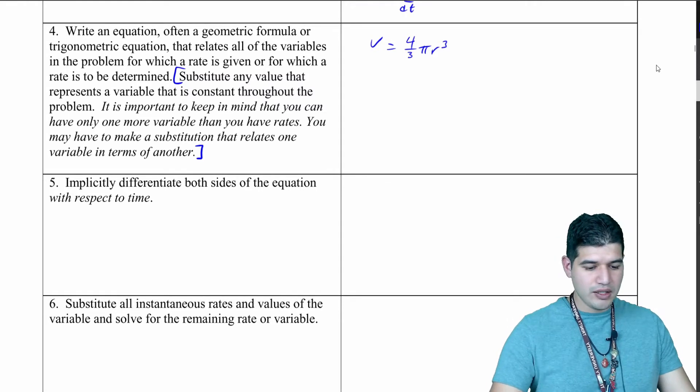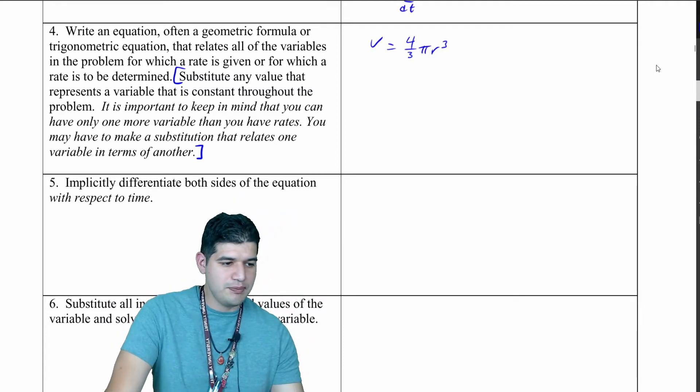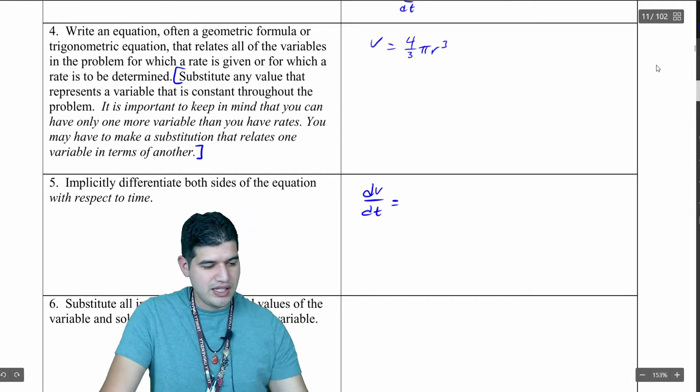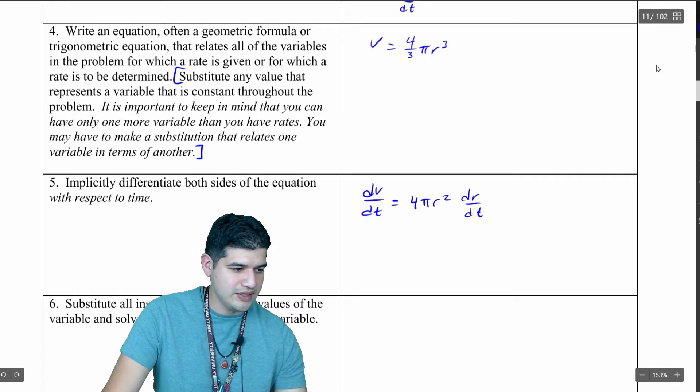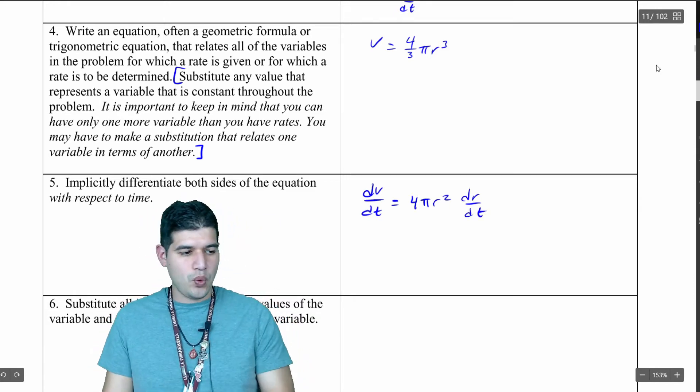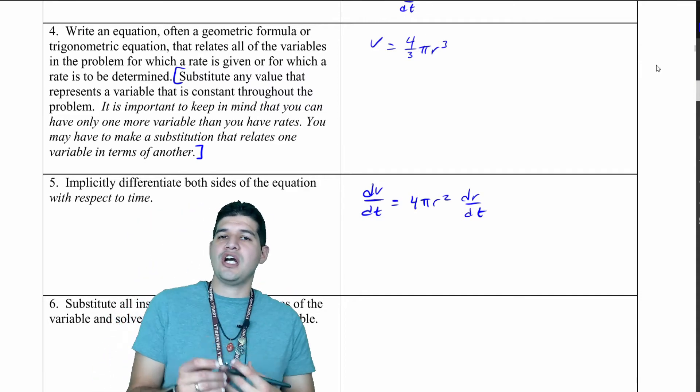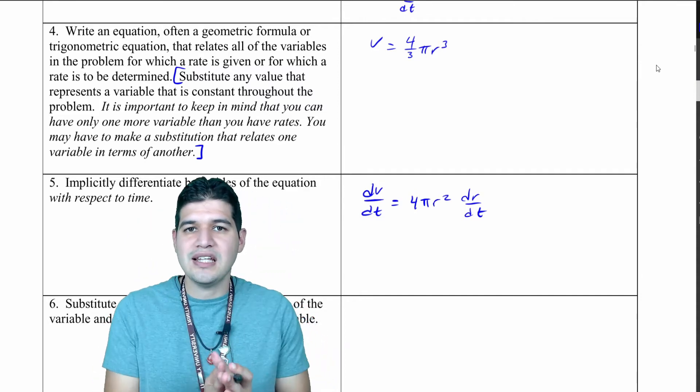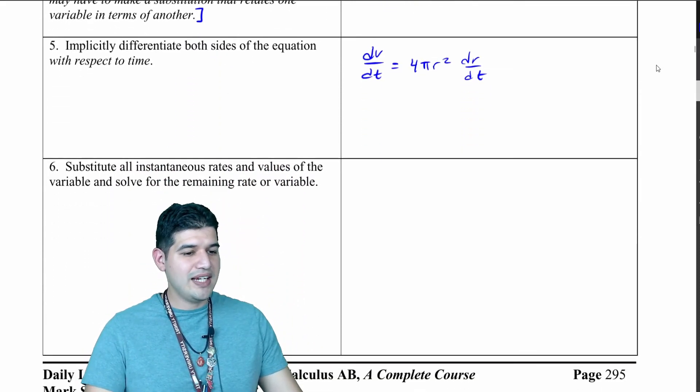Now from here, what you want to do is just differentiate that formula. We've done it before, but I'm going to write it again. dV/dt equals, bring that three down, 4 pi r squared, and then dr/dt. This is why it's important not to just memorize all those formulas, but to actually know how to take that derivative implicitly.